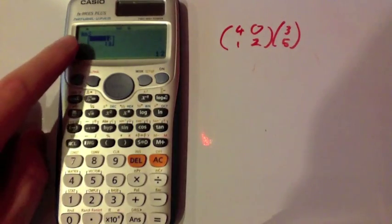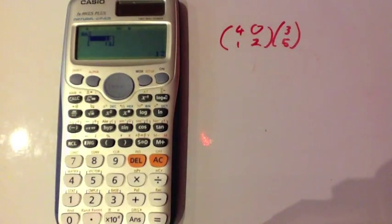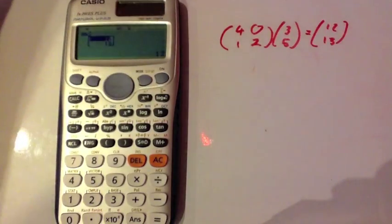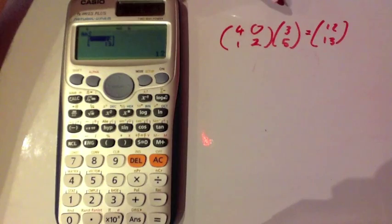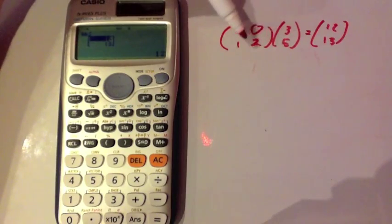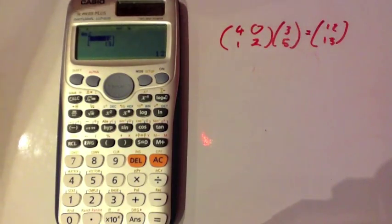And it'll come up with our answer, which is 12, 13. So our answer to that sum would be 12, 13. Obviously, you could do 4 times 3, which is 12, 0 times 5, which is 0 and add them together to get 12. And you could do 1 times 3 and 2 times 5 to get 13 when we add them together.